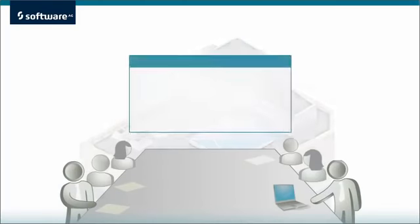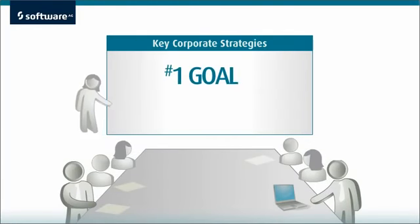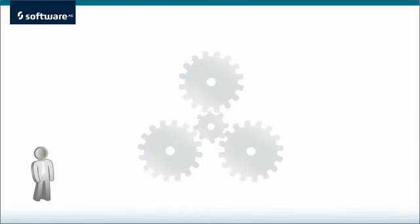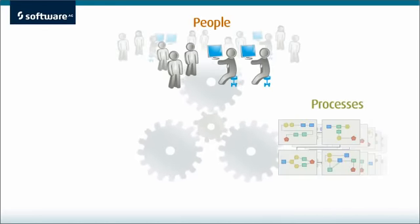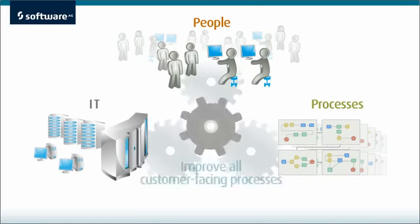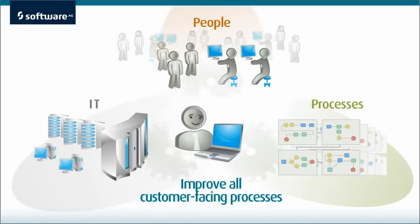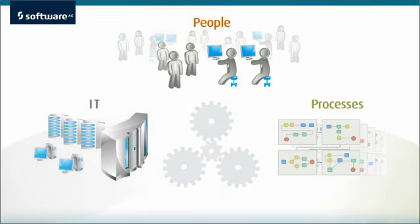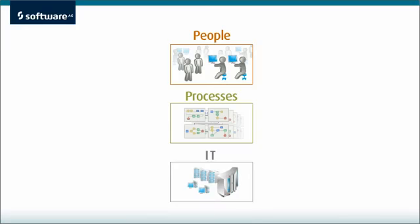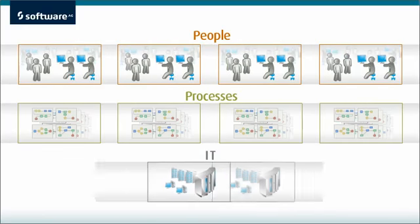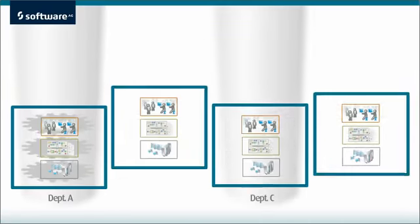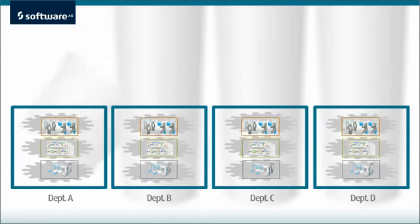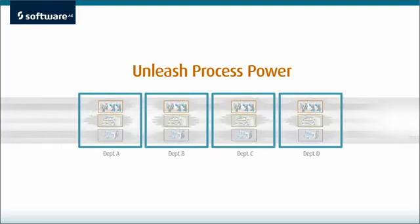Suppose you're running a company where a key element of your strategy is customer service. The obvious first step would be to sync up people, processes, and IT to improve all customer-facing processes. The reason many process improvement efforts fall short is that people, processes, and IT, however effective they may be, are organized by department. To implement the corporate strategy, you need to break down silos and unleash process power.